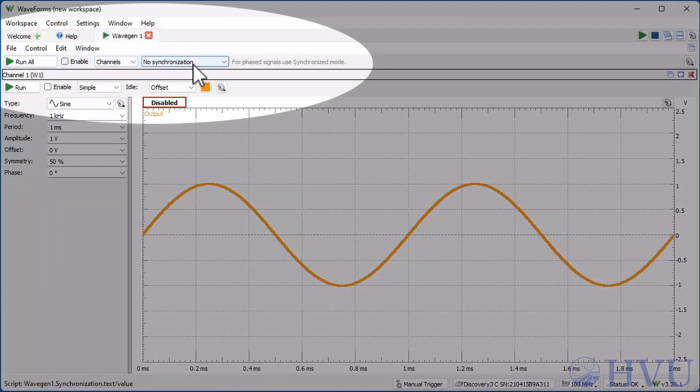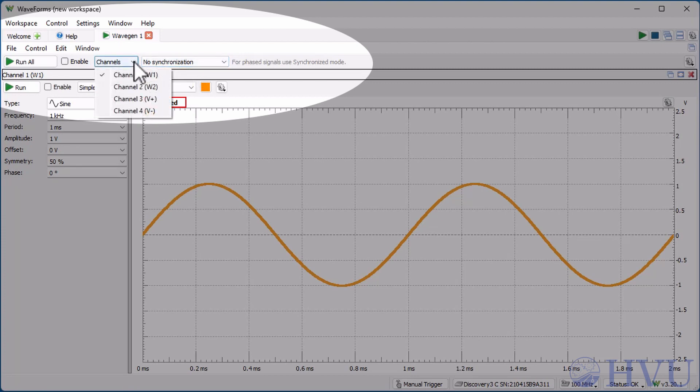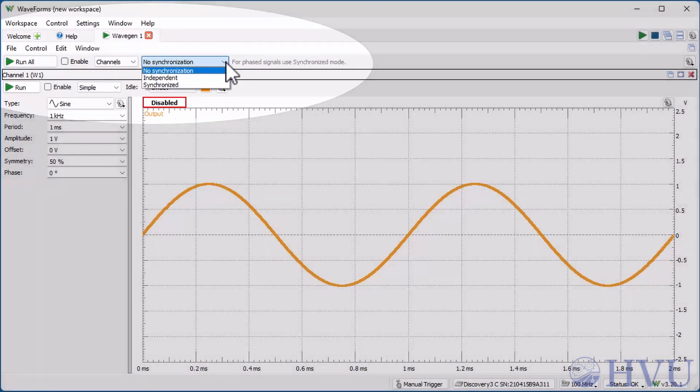This row of icons allows you to control which channels are being used. In the Channels drop-down menu, choose the channels you want. The waveform generator can control not only the two waveform channels, W1 and W2, but also the positive and negative voltages in the supplies instrument, V-plus and V-minus. The Run All button turns on all of your open instruments. This menu lets you control whether the various channels are synchronized with one another or whether they're independent.